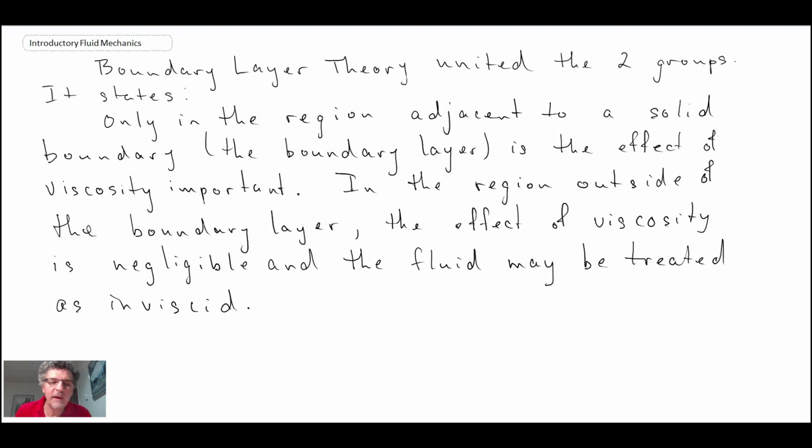So, with this, what the boundary layer theory enabled was the acknowledgement of the fact that viscosity was really only important very close to the wall in this layer called the boundary layer. And outside of that region, for the most part, the fluid could be treated as being inviscid.